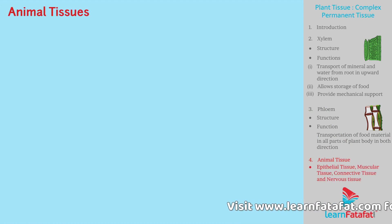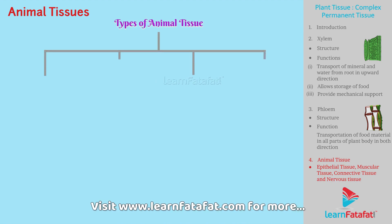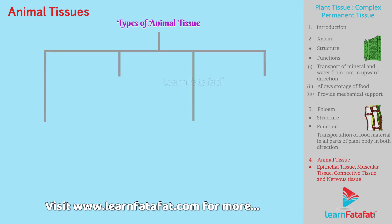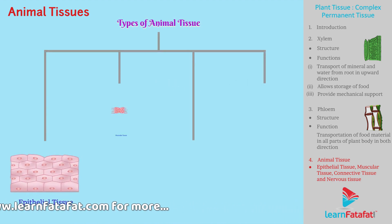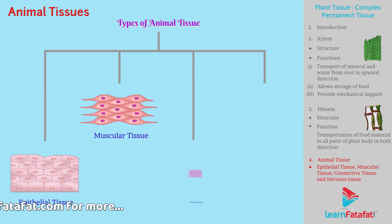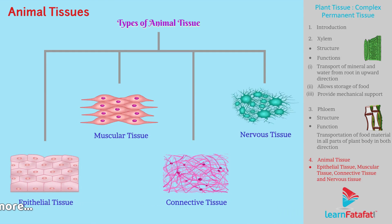Dear students, there are four types of tissues in animals: epithelial tissue, muscular tissue, connective tissue, and nervous tissue.